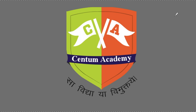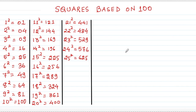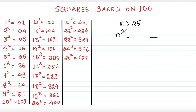Let me start today with one of the techniques which is very important — finding out squares of numbers based on number 100. Before that, I have written squares of numbers from 1 to 25, and there is a basic reason behind that. To find out squares of numbers bigger than 25, we will require squares of numbers 1 to 25, because the last two digits of the square of any number more than 25 will be dependent on the last two digits of squares of these numbers.